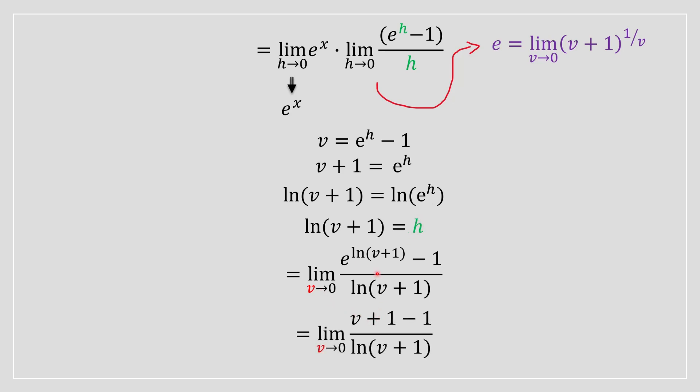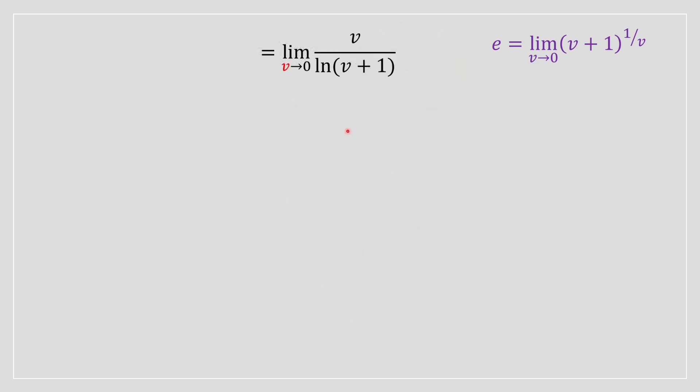So we can simplify this further. The e to the ln part cancels out. So you're just going to have v plus 1 minus 1. Obviously, these two cancel out. And what you're going to be left with is v in the numerator and the denominator of ln v plus 1.